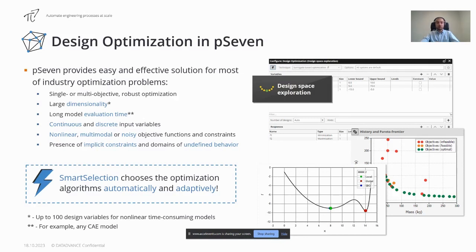One of the benefits of design optimization in pSeven is a so-called Smart Selection. This is a feature of our design space exploration block that automatically chooses the most efficient technique for the given type of problem and data. It allows the user to focus on his engineering task rather than on study of different optimization algorithms.